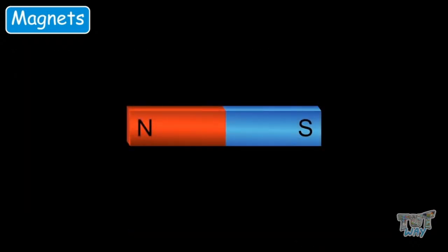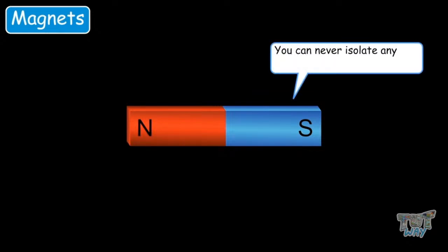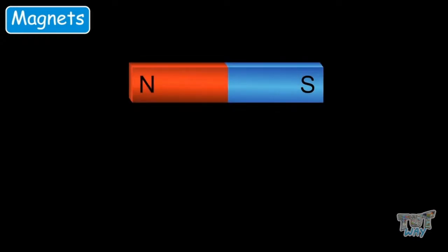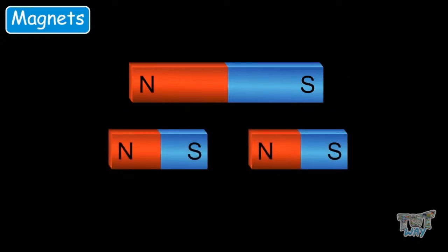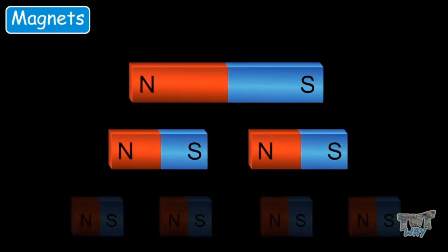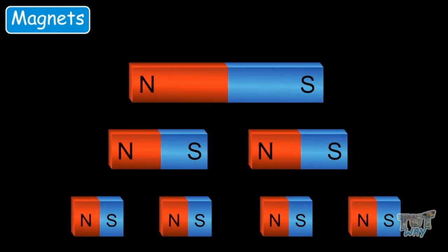Now we will learn another interesting property: you will never be able to isolate any pole of a permanent magnet. If you have a magnet, you can never isolate one of its poles — even if you cut the magnet into two halves, each piece will have two pairs of poles: a north pole and a south pole. And even if you cut those halves into smaller pieces, each individual piece will still have a north pole and a south pole.